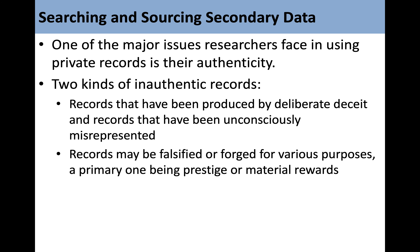One of the major issues researchers face in using private records is their authenticity. There are two kinds of inauthentic records: records that have been produced by deliberate deceit, and records that have been unconsciously misrepresented. Records may be falsified or forged for various purposes, a primary one being prestige or material rewards.